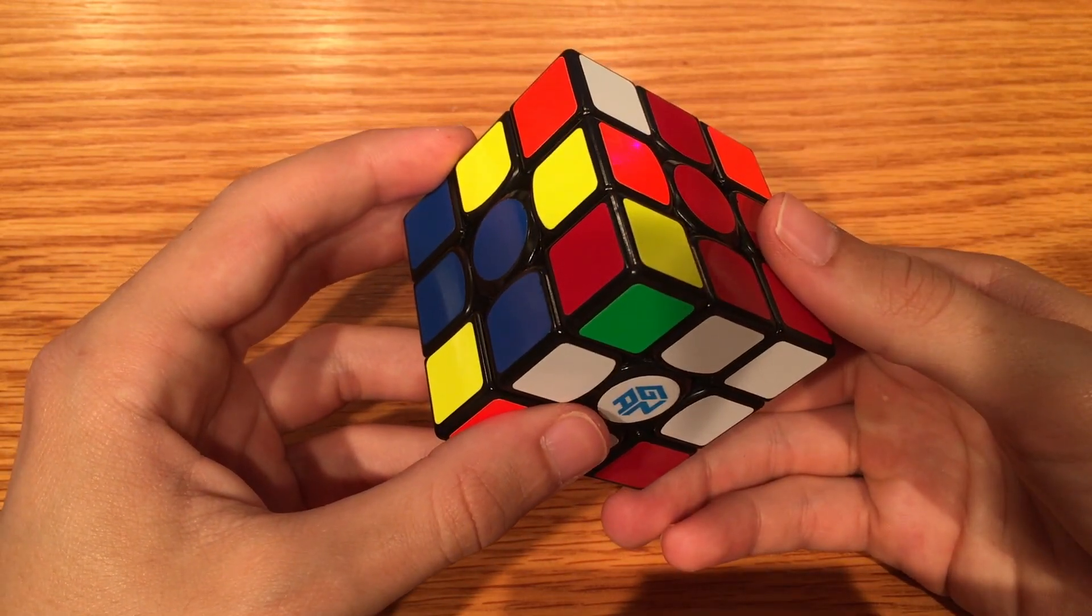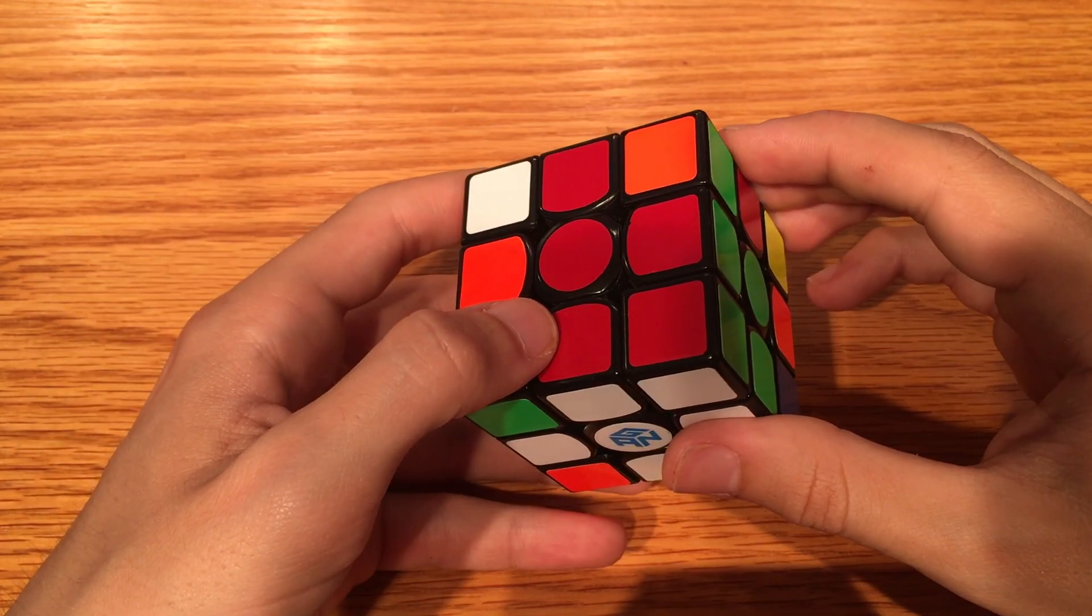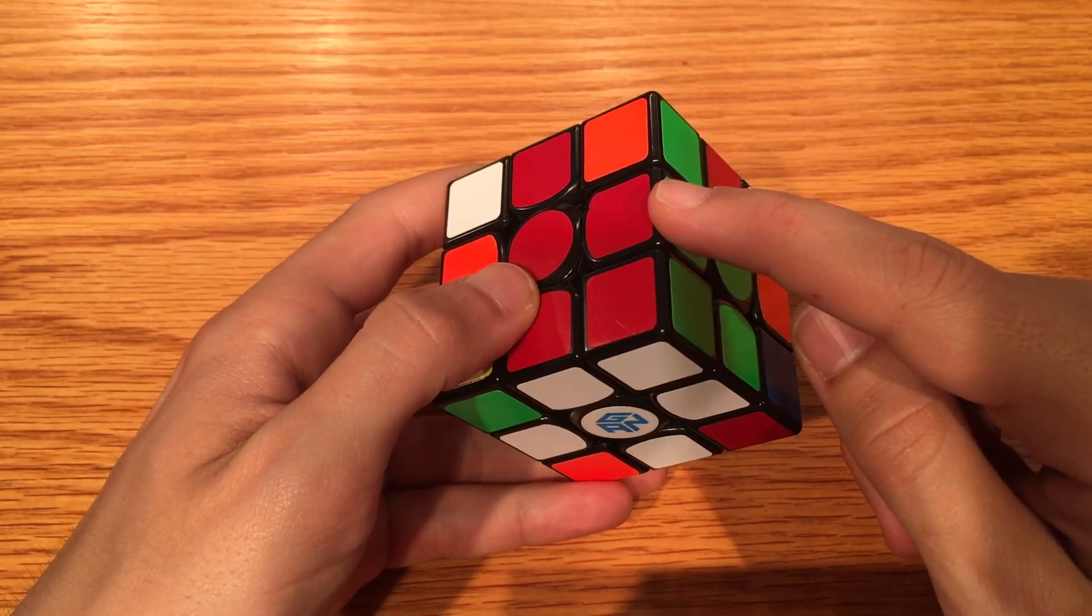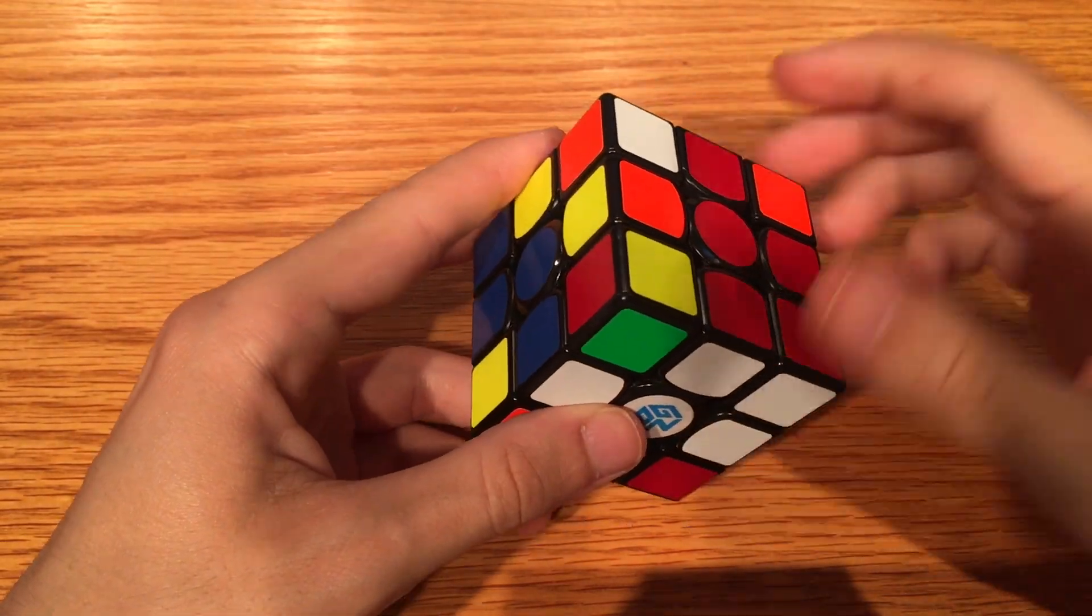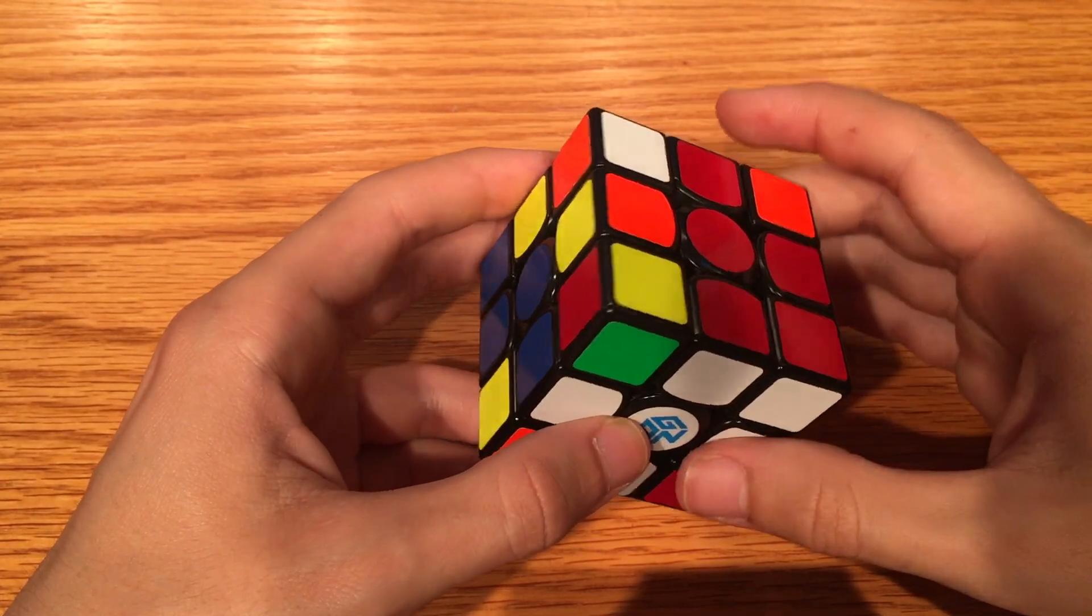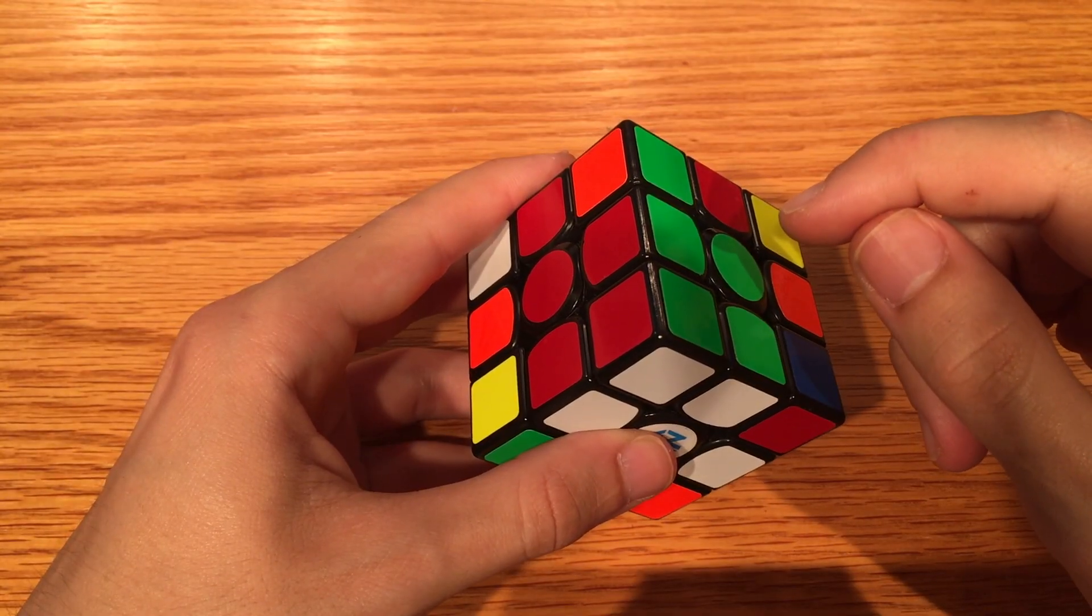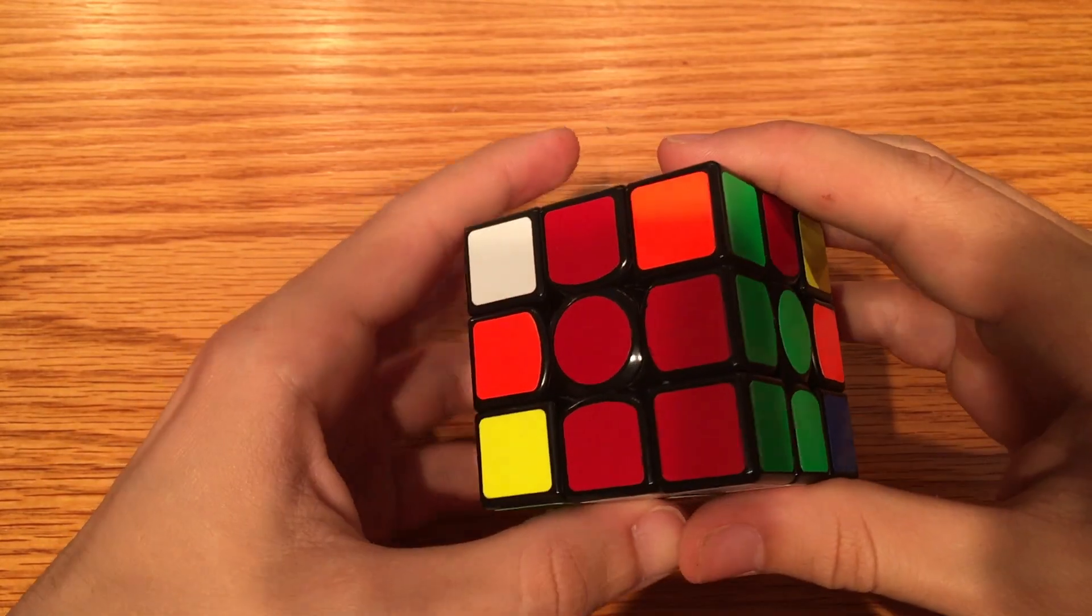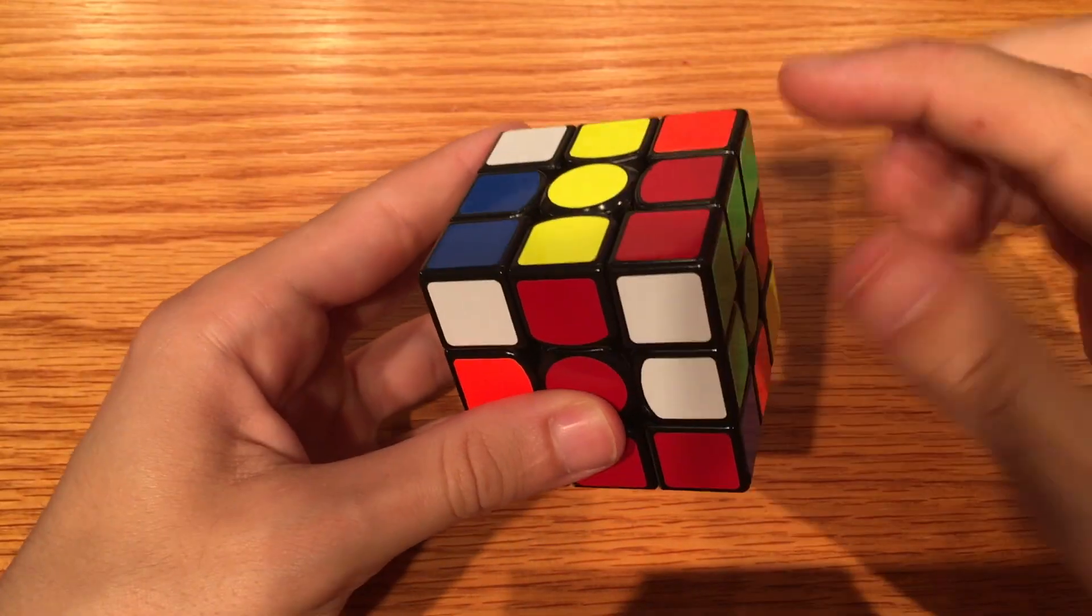This problem has to do with slots. A slot is a way of thinking about the space where a corner and lateral should be. A slot is empty if it is unsolved, which means it just has random pieces in it. A slot is full if it is solved, which means it has the correct pair in it.